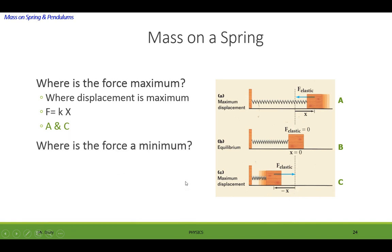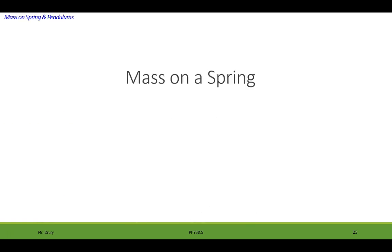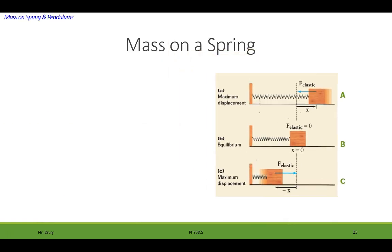Where's the force minimum? Where the displacement is zero. The same idea. F is equal to kx and if x is zero, then obviously the force is zero. And that occurs at B, at the equilibrium position. All right, let's ask another question.